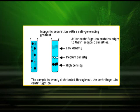In isopycnic centrifugation, a density gradient media is already present inside the centrifuge tube. However, the sample is loaded differently — unlike rate zonal centrifugation where the sample is placed at the top, here the sample is mixed along with the density gradient media. Each particle will try to sink because its density is higher than the surrounding media. But the moment the density of the particle becomes equal to the density of the gradient media, it stops moving — that point is known as the isopycnic point — and that is how it forms a separate band.